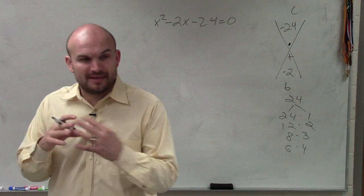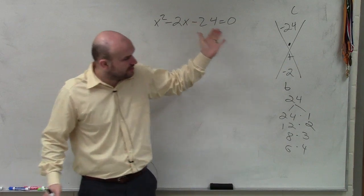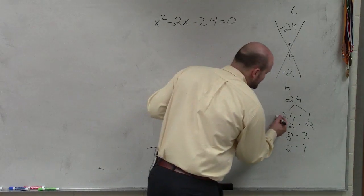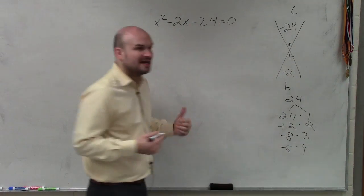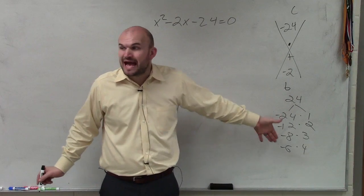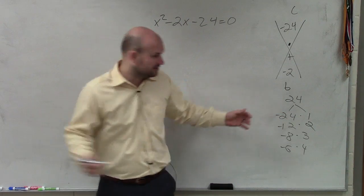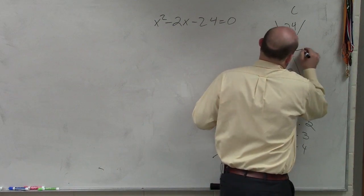So when we're adding these two, we know we have to add them to give us negative two. Well, if we're adding two factors, that means the larger of the two factors has to be a negative number. Right? So we're going to look at these factors and say, what are the only two that add up to give me negative two? Because they all multiply to give me negative 24. Six and four. Negative six and positive four.